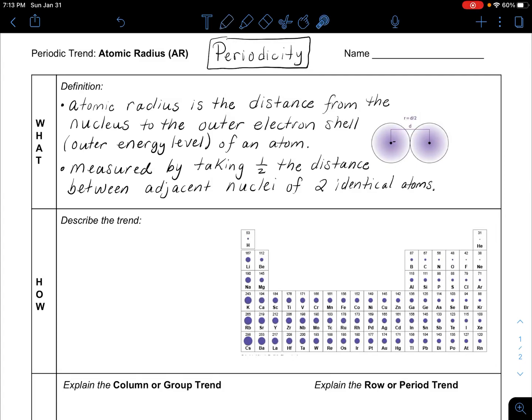Atomic radius is the most important periodic trend in chemistry, also called periodicity trend, because it will help explain all the other trends of ionization energy, electron affinity, and electronegativity. If you'd like a copy of this Google Doc, go to the description below, click the link, and it'll force a copy of this document for yourself.